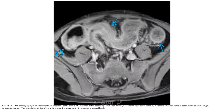This is a T1C+ fat-saturated MRI enterography. In early adolescence, the ulcerative colitis shows inflammation of the ascending, descending, and sigmoid colon with wall thickening and hyperenhancement. There is also mesenteric stranding of the adjacent fat and engorgement of the vasa recta at several levels.